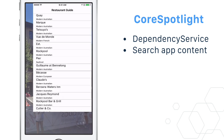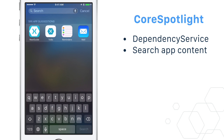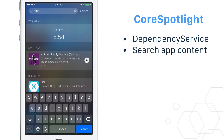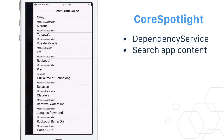Next up is Core Spotlight. Each restaurant entry is indexed and is searchable. Clicking in the results deep links into the app restaurant page.